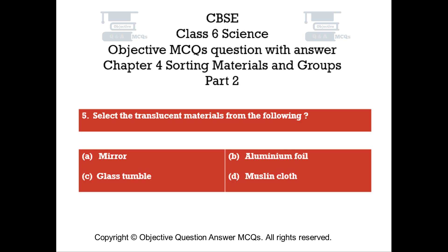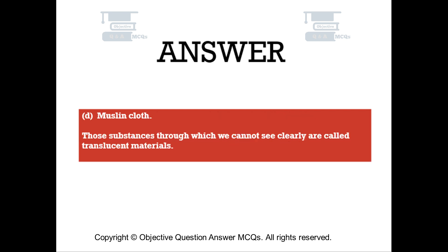Question number 5. Select the translucent materials from the following. Option A: Mirror. Option B: Aluminium Foil. Option C: Glass Tumbler. Option D: Muslin Cloth. The right answer is Option D — Muslin Cloth. Those substances through which we cannot see clearly are called translucent materials.